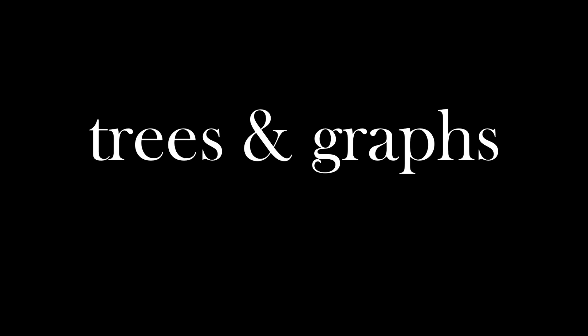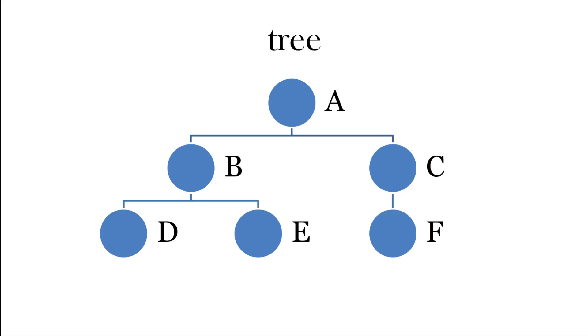Trees and graphs. So here's a tree. We have A at the top, the root, and it has children B and C. C has a child F, and B has two children, D and E. This is also a data structure you use quite a lot.